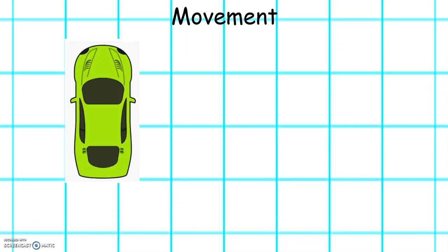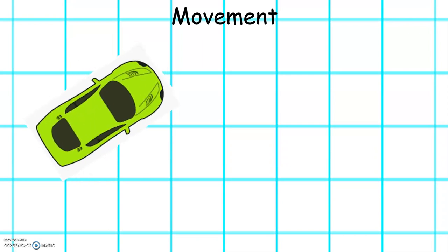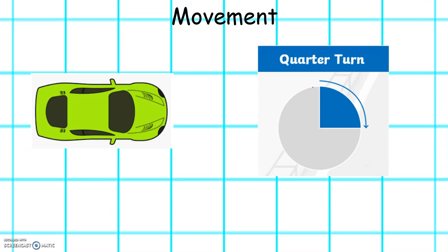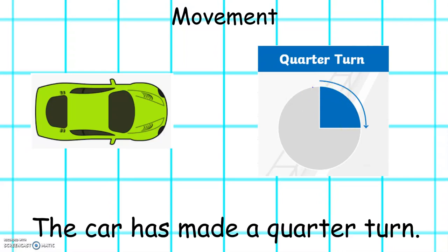Let's look at how this car turns. The car has made a quarter turn. If we imagine a circle again, the car has turned a quarter of the circle. So this car has made a quarter turn.